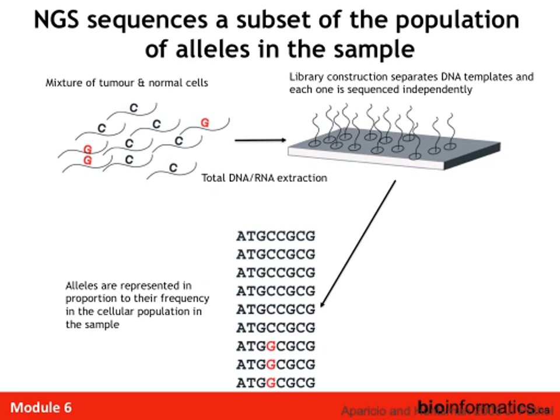In addition to cost and throughput, one real advantage for cancer is that because it approximates single-molecule sequencing, we can read the proportion of alleles in a digital fashion. For example, if 30% of cells in a tumor sample harbor a mutation, approximately 30% of reads will harbor that mutation. This gives us precise measurements on the abundance of mutations, allowing us to address issues like mutational heterogeneity in ways we could never do before. The digital nature of this technology gives it an additional advantage beyond cost and throughput.